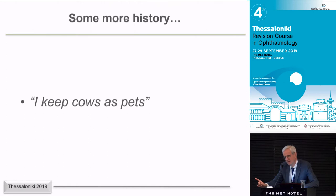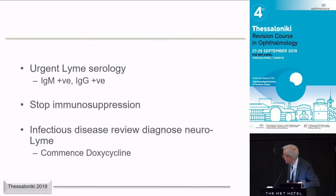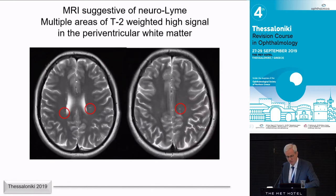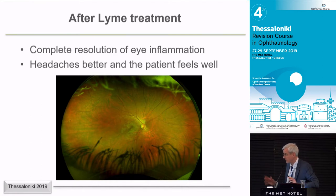What test would you do now? Lyme — cows are big animals that carry ticks. You don't have to get Lyme just from deer; you can get it from horses or cows. We did Lyme serology, which is perfectly reasonable given her exposure every weekend. Of course she was Lyme-positive — IgG and IgM positive. We stopped immune suppression, got urgent infectious disease review. Brain scan showed periventricular inflammatory lesions — this is neurolyme. We gave her doxycycline, the inflammation melted away after a month, and she was cured.